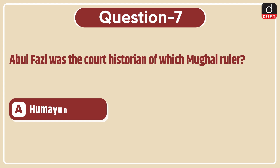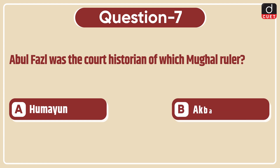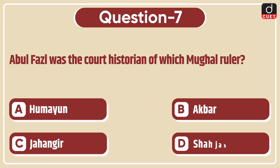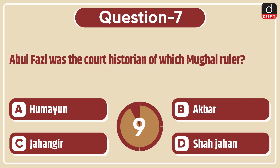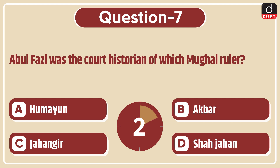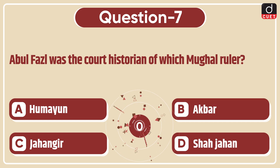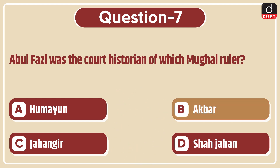Next question: Abul Fazl was the court historian of which Mughal ruler? Humayun, Akbar, Jahangir, or Shah Jahan? The correct answer is option B, Akbar.